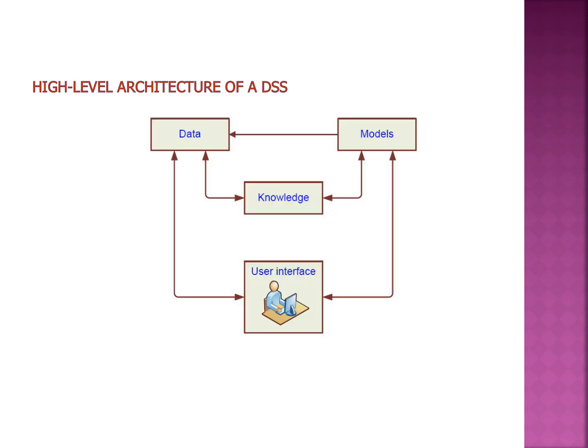This is the high-level architecture of a decision support system. We have a data component which comes from external or internal sources, generating the type of data necessary for the system. Then there are models, created using statistical or mathematical models, which generate knowledge. Similarly, the data-oriented DSS generates insights from data, and the model-oriented DSS generates useful knowledge for decision-making. Finally, the user interface provides a facility to interact with the system — users can view dashboards, give input, and see results in the form of graphs or tables.